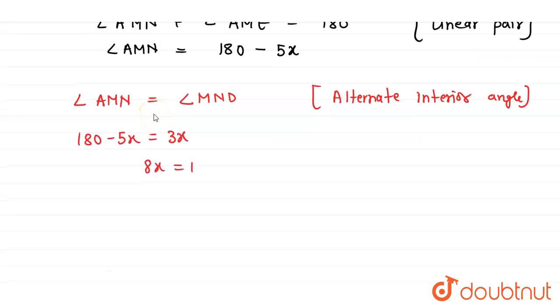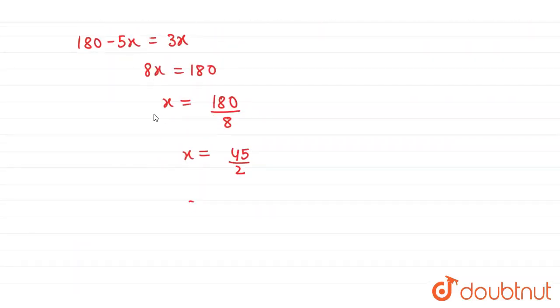8x is equals to 180. Therefore the value of x is 180 by 8, that is 45 divided by 2. Value of x is 22.5 degrees. This is our answer.